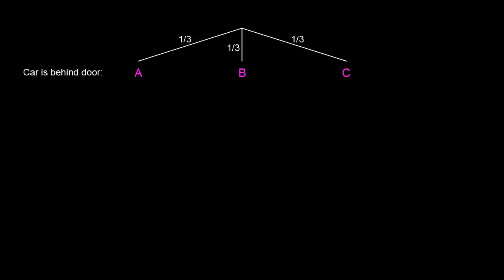So, let's start the tree diagram. And by the way, I got the idea for this tree diagram from cutthenot.org. The car can be behind any door with equal probability, so the probability it's behind door A is one-third, behind door B, one-third, and behind door C, one-third.